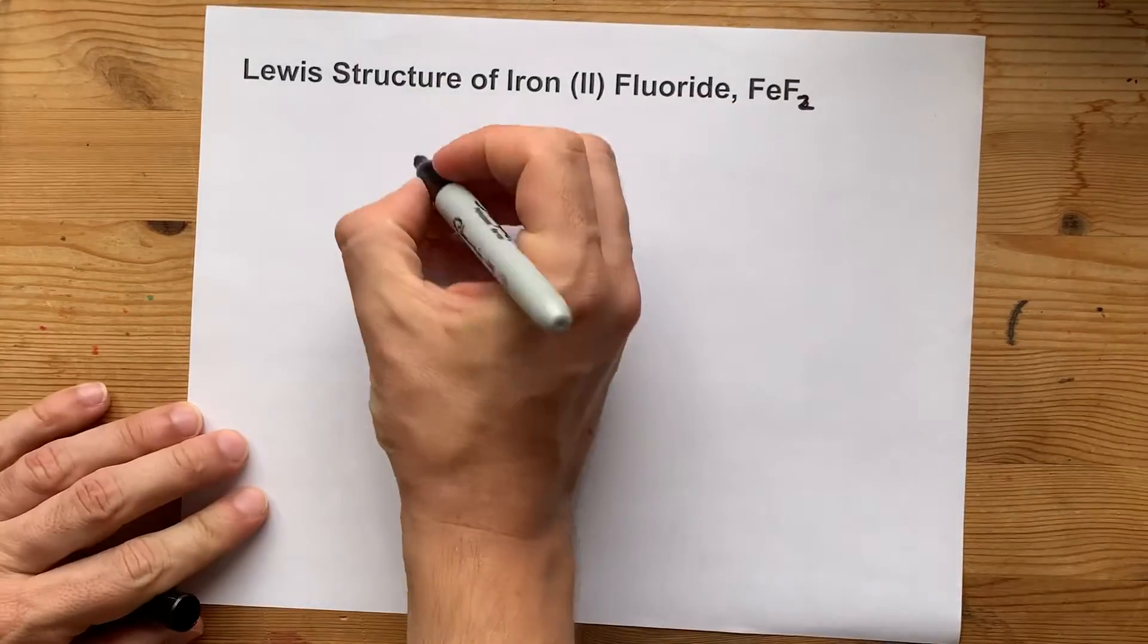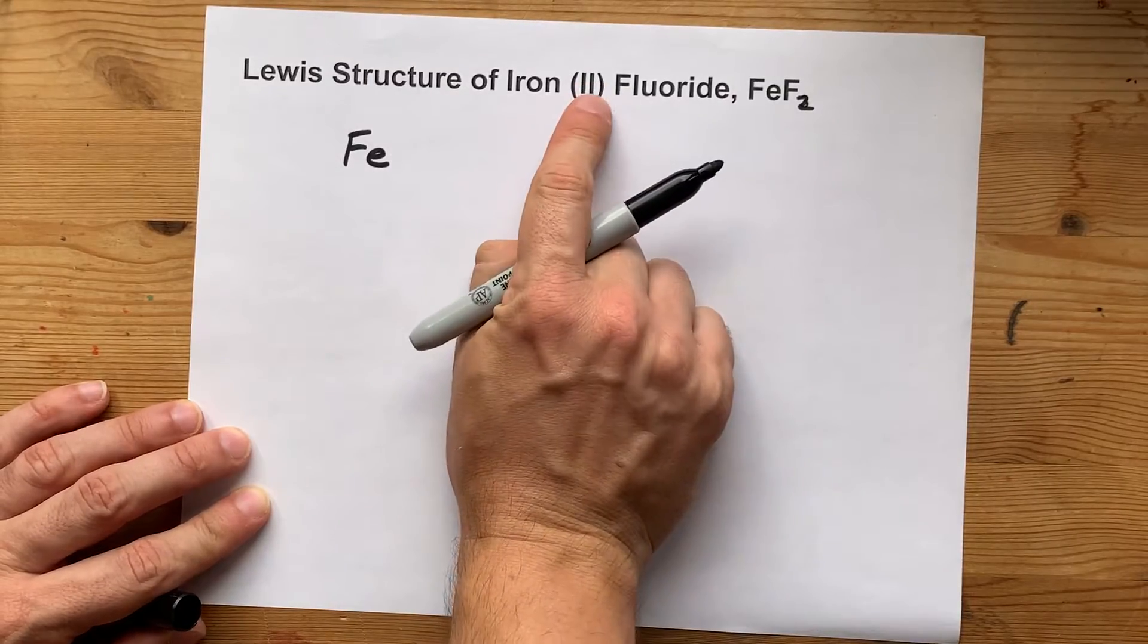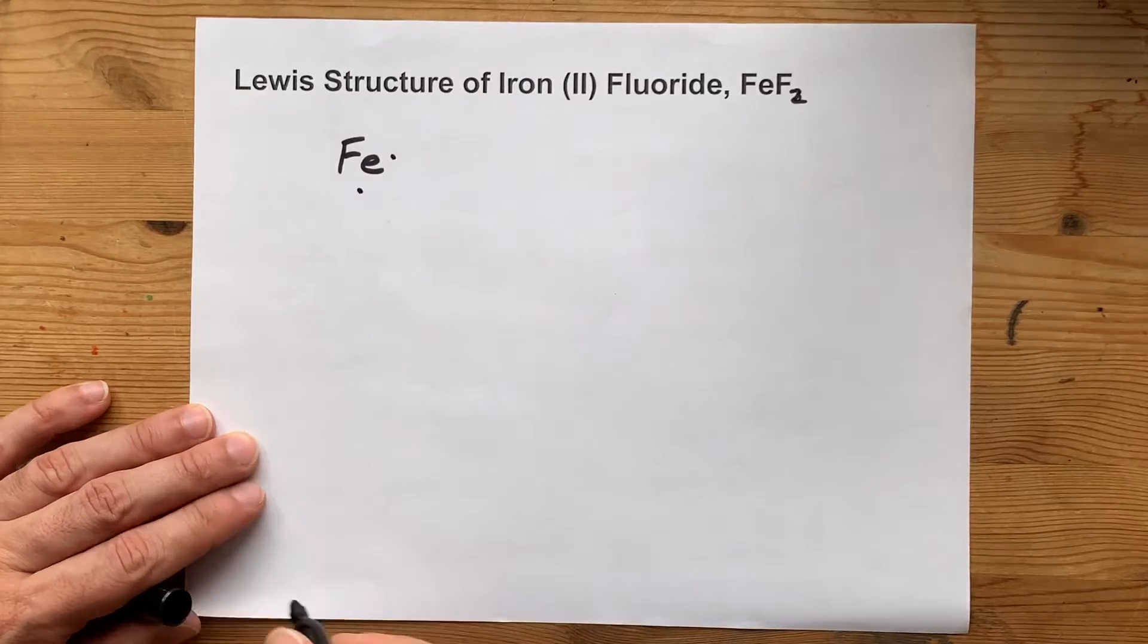What you're going to do is draw yourself an iron atom with the same number of electrons as the charge it's going to end up with. 1, 2 electrons.